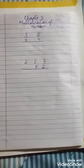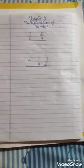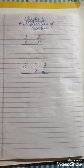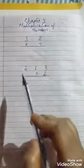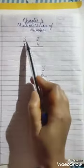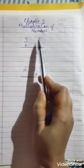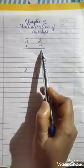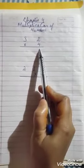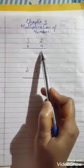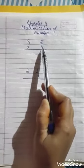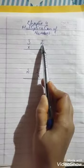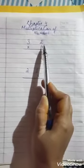These sums — these examples — you will do in your rough copy. In this first sum, we can see that there is multiplication of a two-digit number by a one-digit number. We will always start the sum from the right-hand side, that is from the ones place.